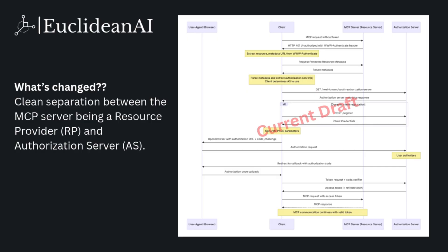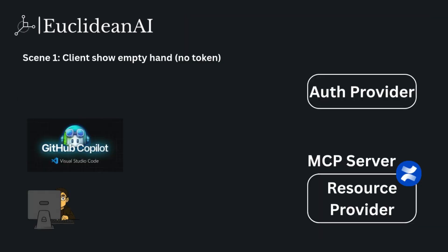Anthropic has updated the draft spec to incorporate this change. It introduces a clear separation between the MCP server — which is the resource provider — and the external authorization server. You can check out the draft spec in the link below. Now, let's walk through a four-scene roleplay to illustrate the new flow.